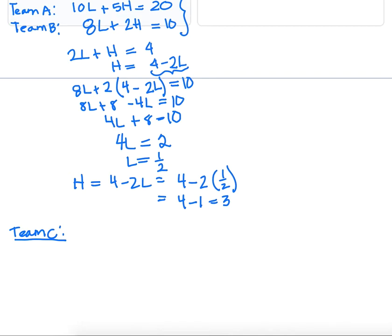We're told that Team C completed 8 long jumps, since they only missed 2, and all the high jumps were completed successfully. So we can write an expression for Team C, 8L plus 5H, and we're just going to plug in our values for L and H to calculate Team C's points.